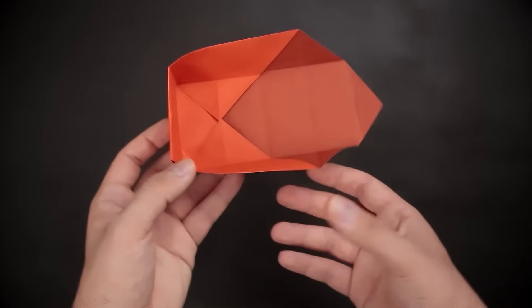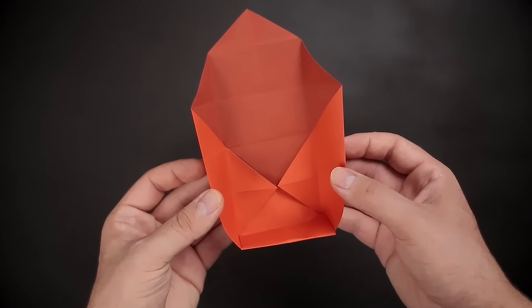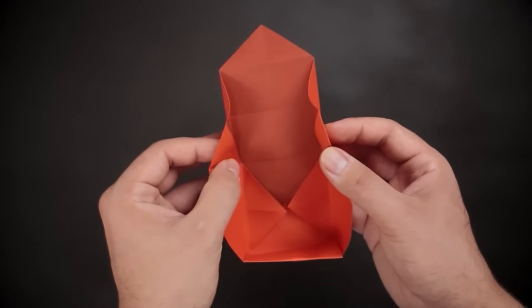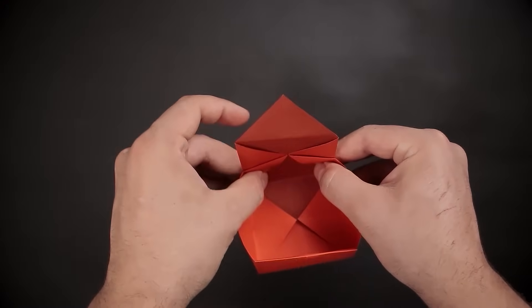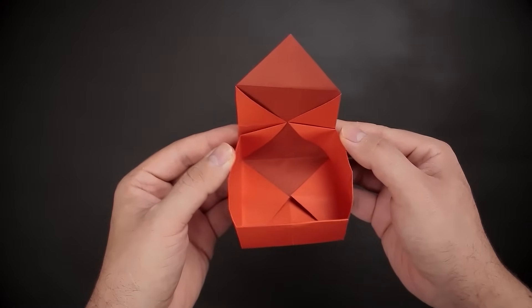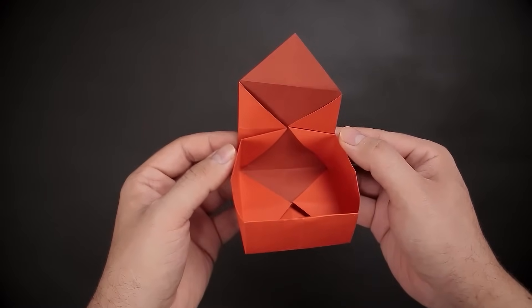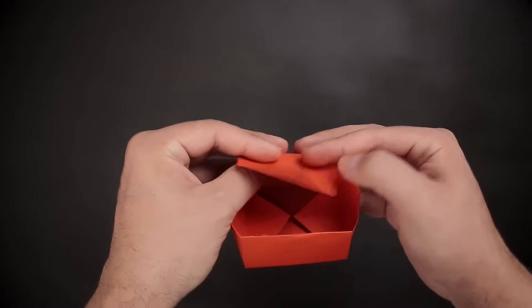Let's go to the other side and repeat the same thing. First, we close the sides using the small diagonals. Then, we fold the remaining paper on top, fitting the corner inside the box.